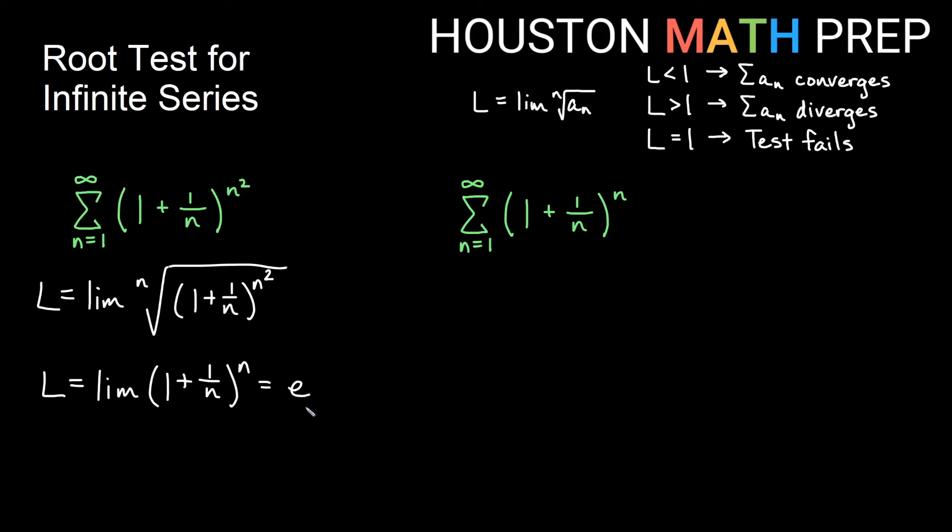e, remember, is about 2.7 and some change. So we say our limit is greater than 1. Since our limit is greater than 1, we know that this diverges by our root test.